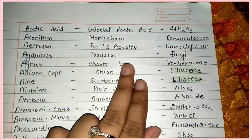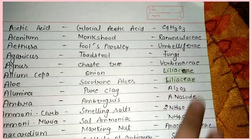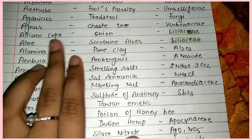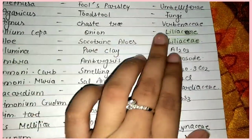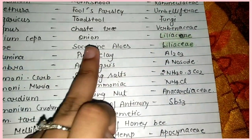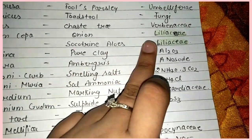Agnus — Chaste Tree, family Verbenaceae. Allium cepa — Onion, family Liliaceae. Aloe — Socotrine Aloes, family Liliaceae.